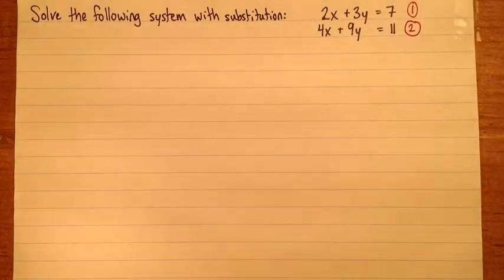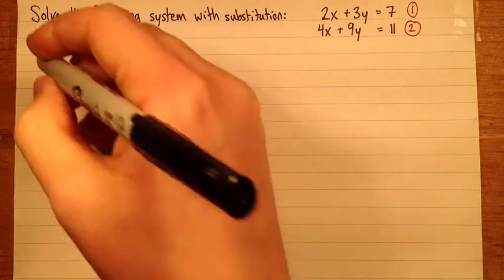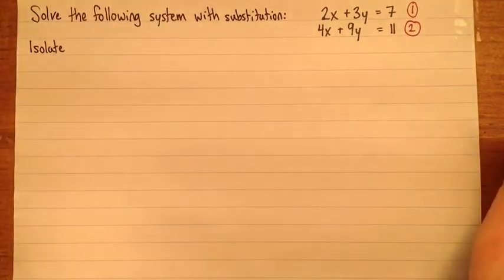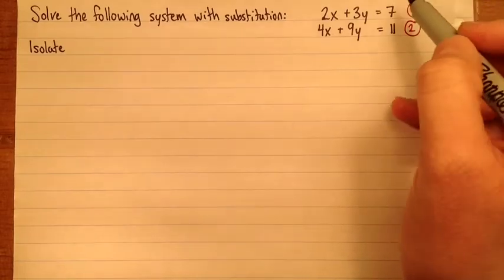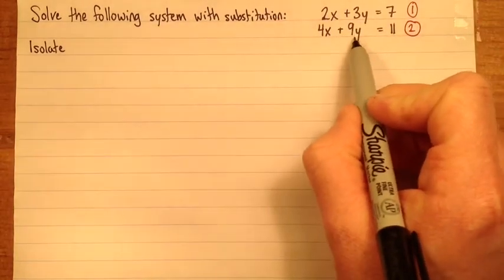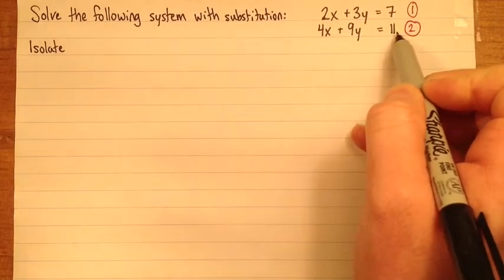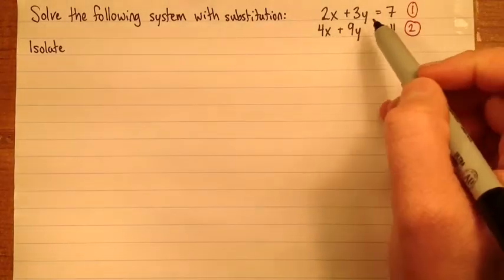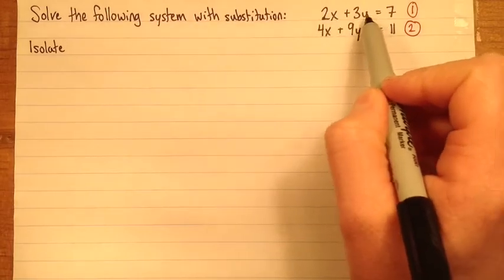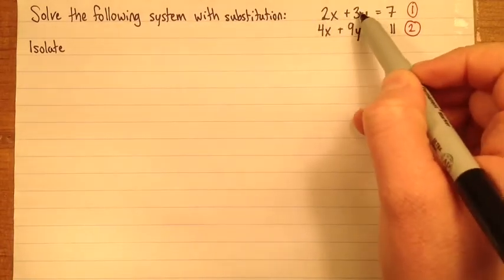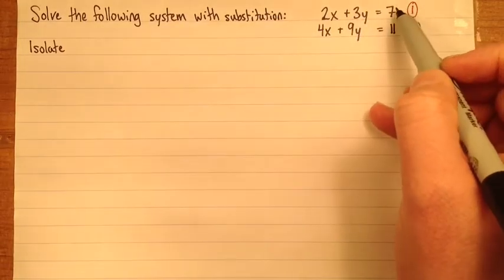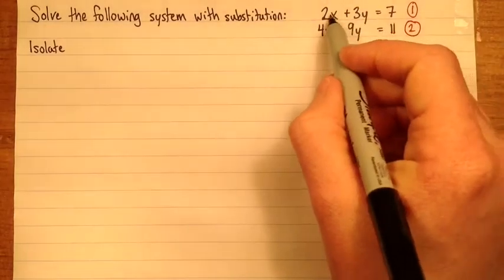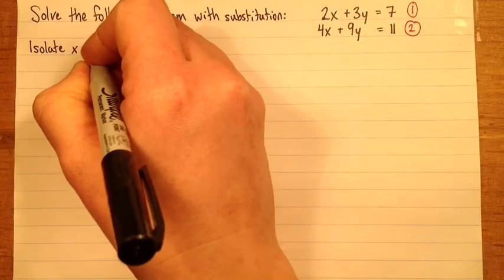So first of all, we have to write down what we're going to do. We're going to isolate one of the variables in one of the equations. So isolate... All of these would be reasonable choices. If I isolated, say I isolated y in equation 2, I'm going to have to divide everything by 9, and I'd have 11 9ths, and I'd have 4 9ths x, which is fine, but it's a bit messy. It would be a bit nicer if I isolated x in equation 1. Then I'll just have 3 over 2, which is just 1 and a half y, and 7 over 2, which is just 3 and a half. So that'll make my numbers a little bit nicer. So that's what I'll do. I'll isolate x in equation 1.